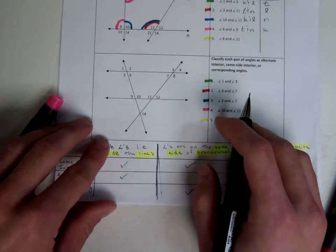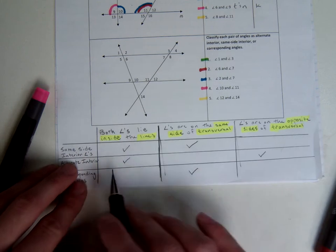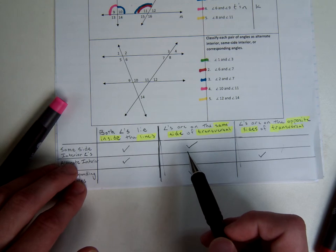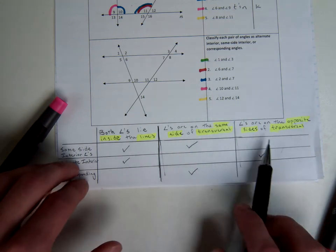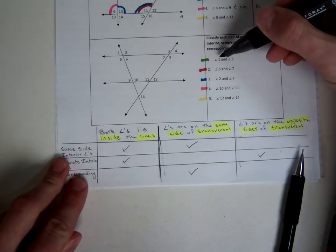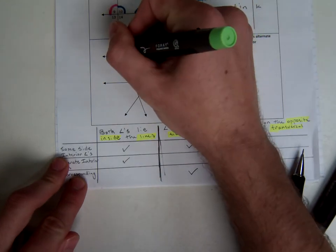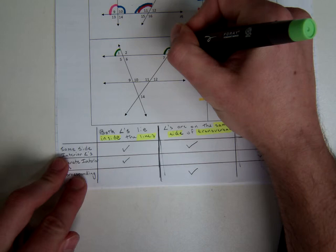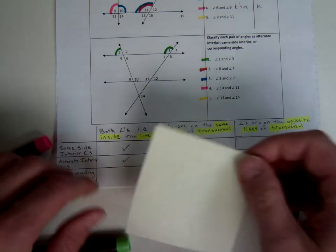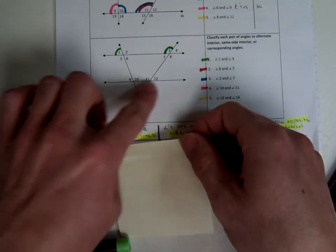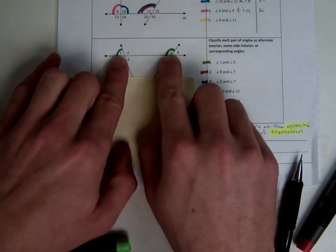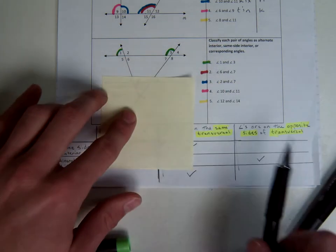Moving on to classification — I'll do the first two and leave the last three for you to attempt on your own, but it should be relatively easy. Color coding is a great tool to help you through this. For the first one, we're looking at angles 1 and 3, and I'm going to use the method of covering up all the lines we're not really using.